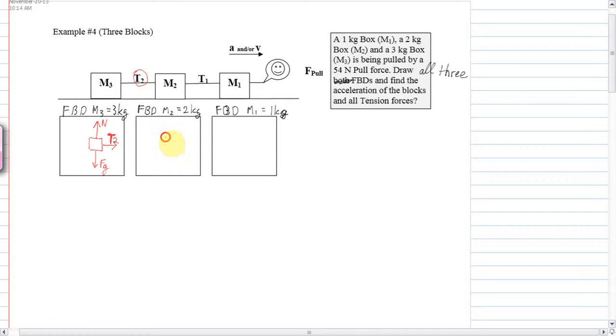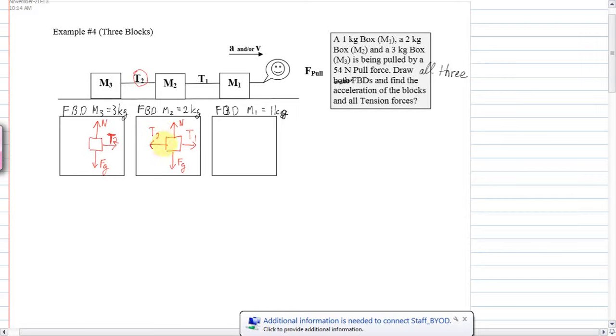M2. There's a normal. There's a force of gravity pulling down. And T1 is pulling this way and T2 is pulling back. Just like yesterday when we did it in the last example, example number three, you do feel that pull back. If you're being pulled forward and you're pulling someone next behind you, you do feel that tug behind you. You know that, it hurts your arm.